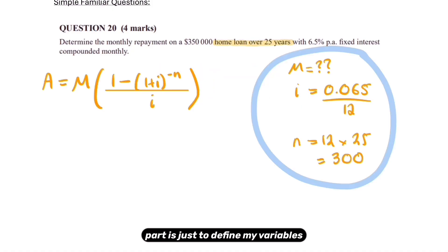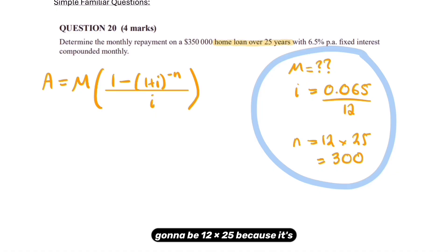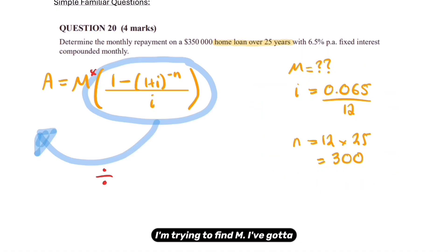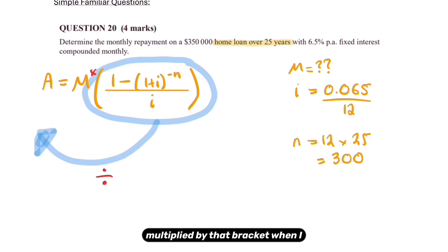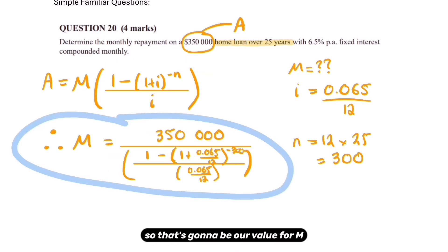The next step is to define variables. I is the interest rate as a decimal per compounding period, and N is 12 times 25 because it's monthly for 25 years. Because I'm trying to find M, I've got to move the entire big bracket over to the other side — since M is multiplied by that bracket, moving it over means divide. So that gives us our formula for M and I've substituted my values.